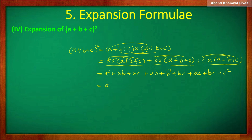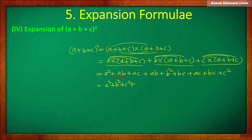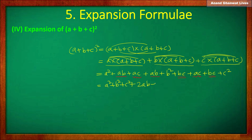So we have a² plus b² plus c². Now search and find the like terms: ab and ab, ac and ac, bc and bc. Adding the like terms: ab plus ab gives 2ab, ac plus ac gives 2ac, and bc plus bc gives 2bc.